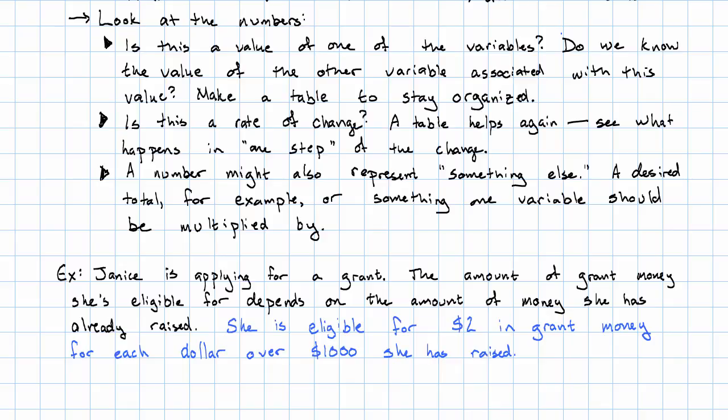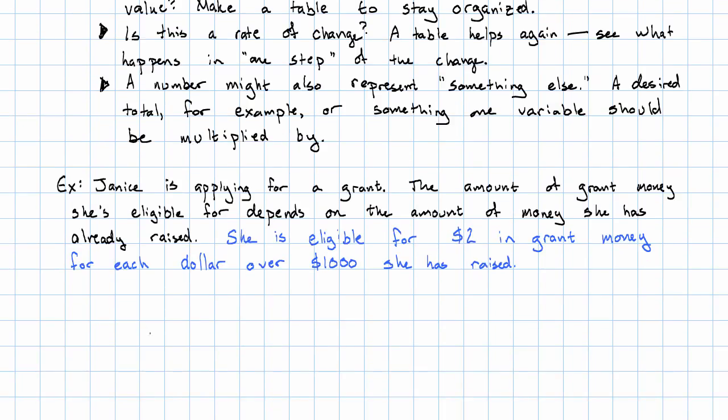Let's continue the example we saw above in two different ways. Suppose that we're now told that Janice is eligible for $2 in grant money for each dollar over a thousand she has raised. $2 for each dollar? That's a rate, and since we're given it as a number, that tells us that we really do want a linear equation. What about these other numbers? We said that the amount that she raised is independent. The amount of grant money she's eligible for is dependent.